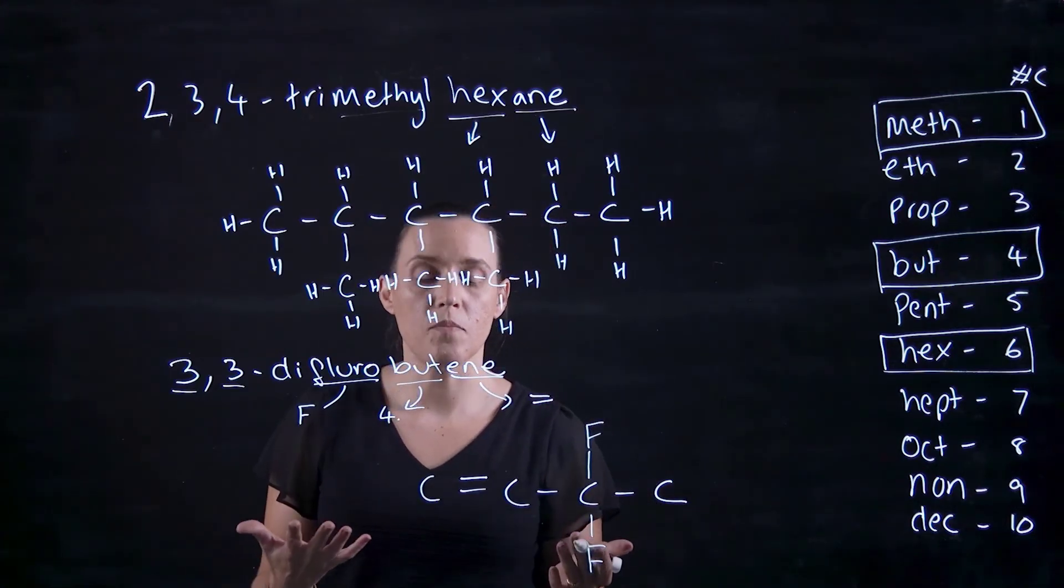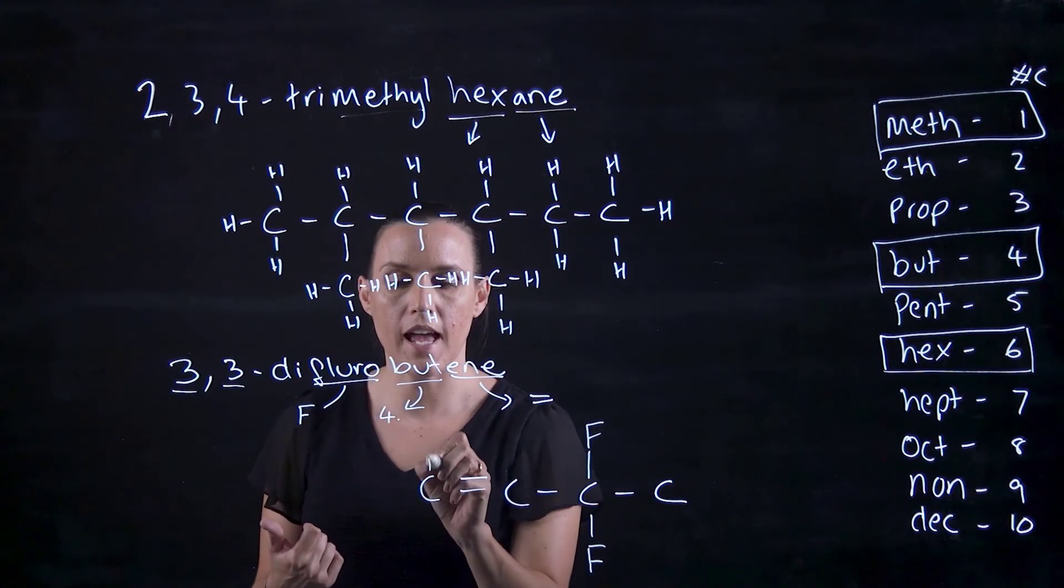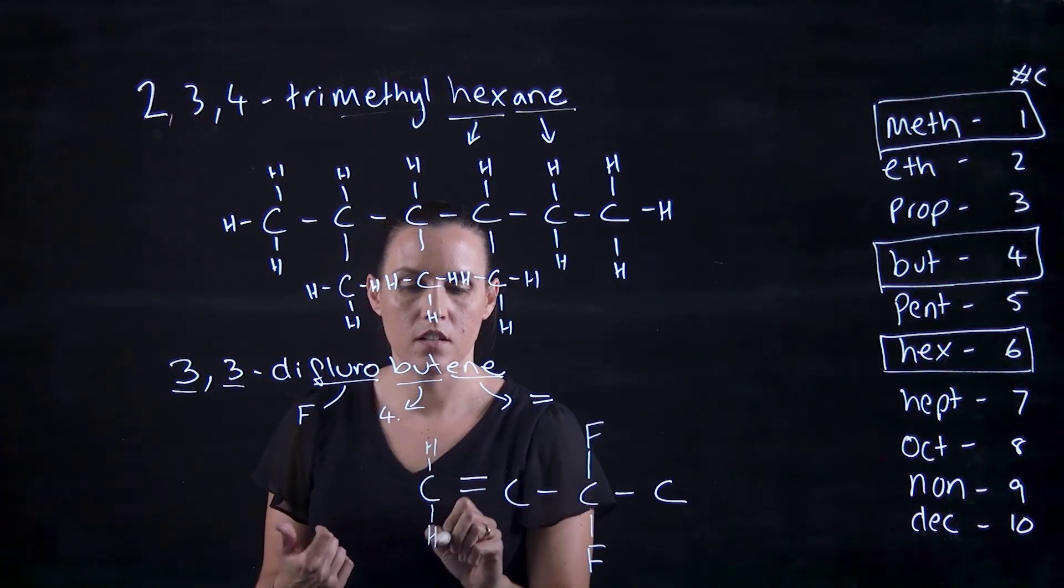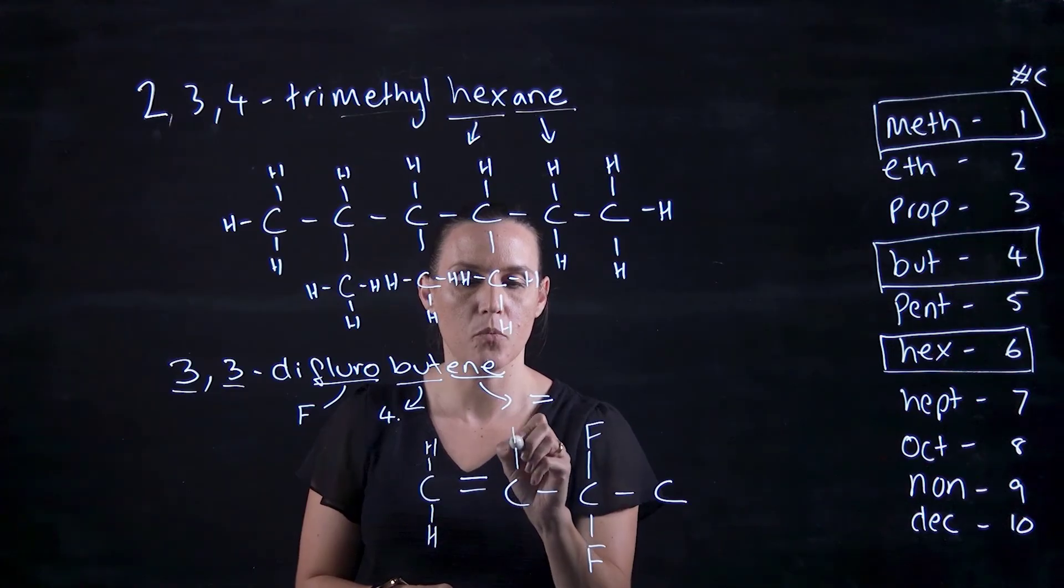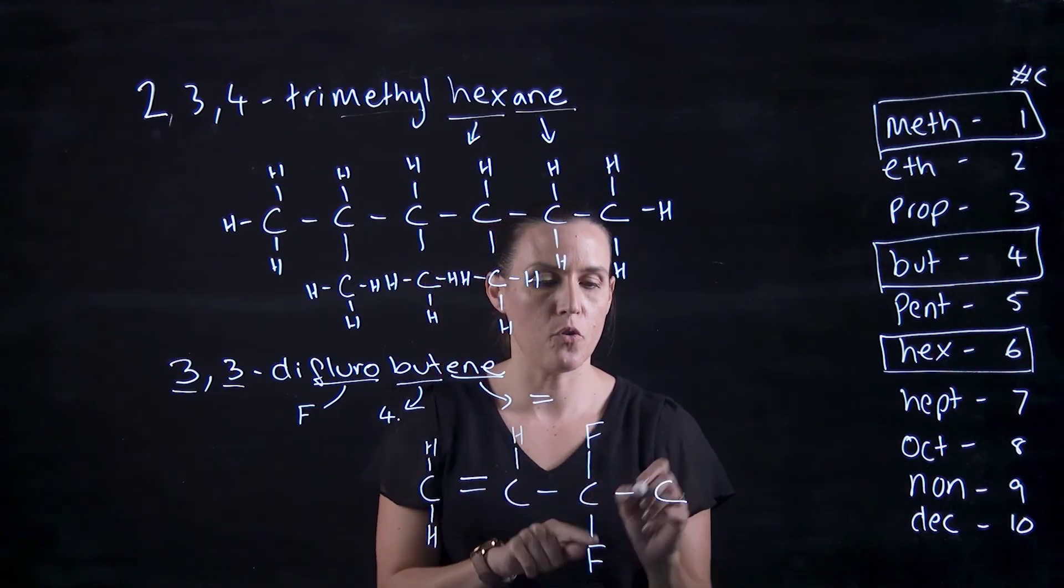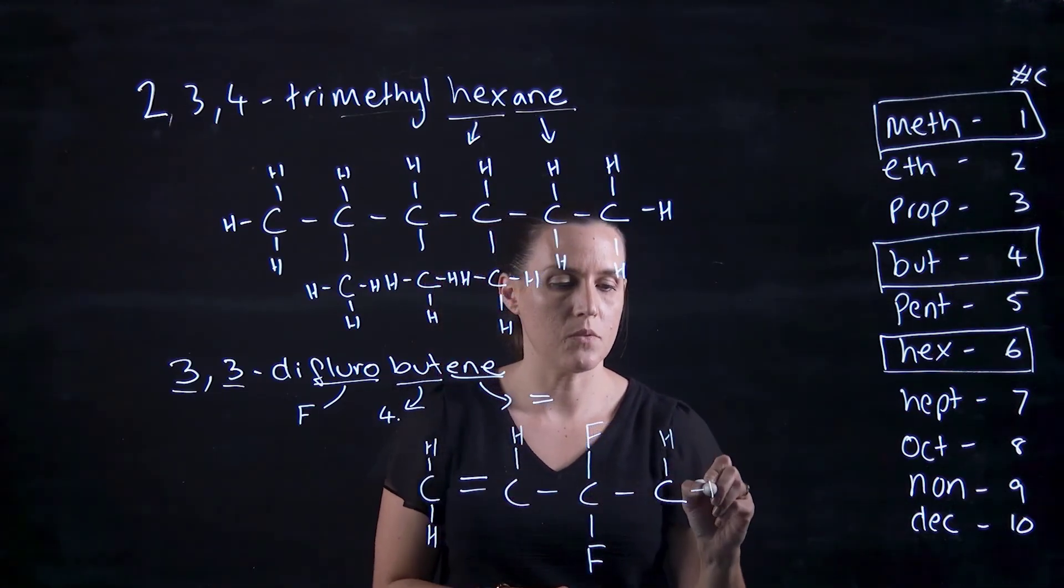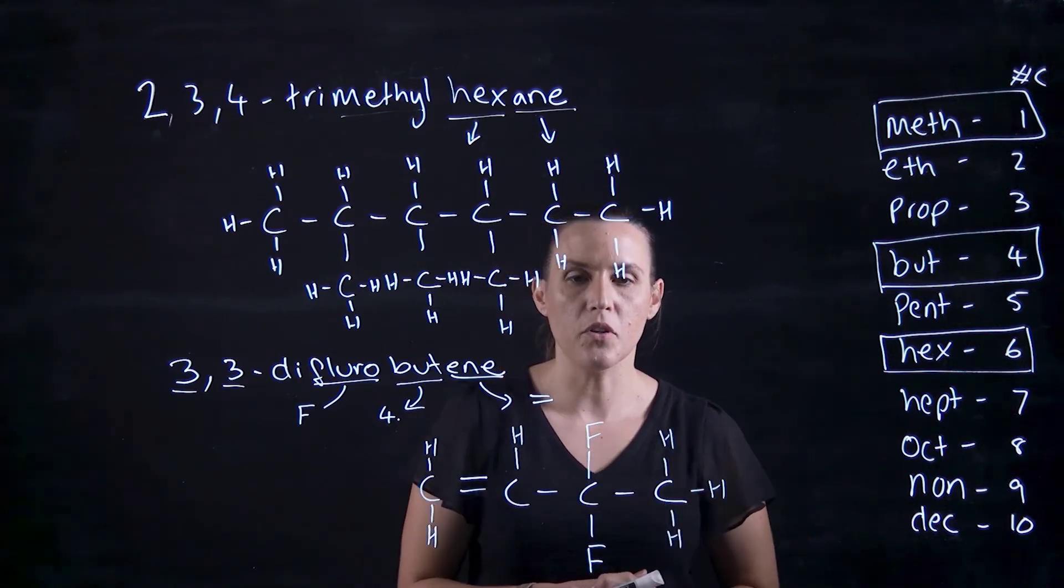So now I can go through and make four bonds to each carbon by adding in my hydrogens. So I've got two here, so I need two more. I've got two and one, so I only need one more. This one's already got four bonds, and this one here would require three more.